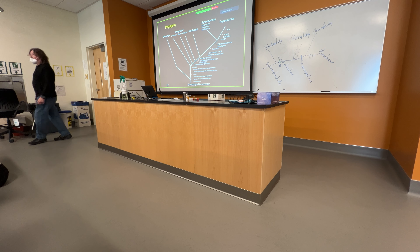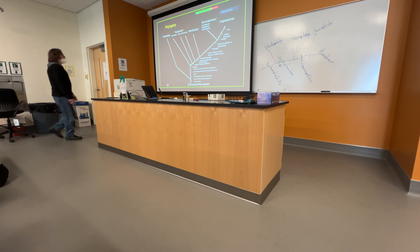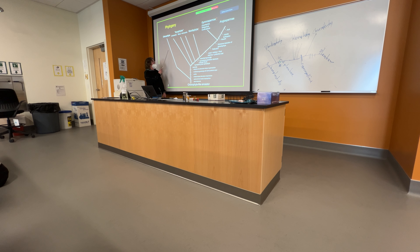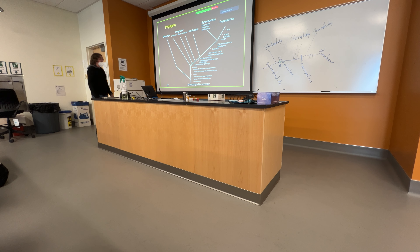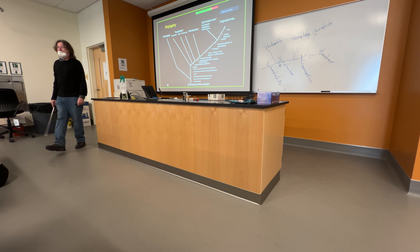So there's Charophyta. There are two different synapomorphies that tie Charophyta to the plants. I already mentioned one — sporopollenin. But also between their cells they have something called plasmodesmata. Plasmodesmata is a gap in the plasma membranes of adjacent cells.